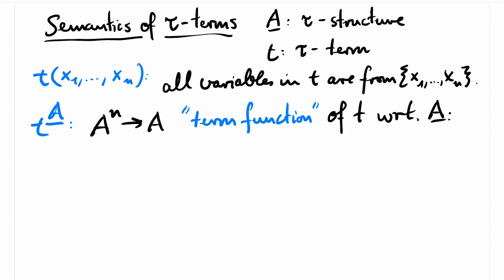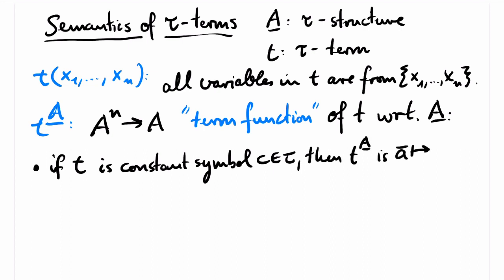If T is a constant symbol, then the operation T superscript A is the operation that always returns the value for that constant symbol in the structure A. If T is a variable, then it must be equal to xi for some index i. In this case, T superscript A is defined to be the i-th projection. That is the operation of arity n that returns the i-th argument.